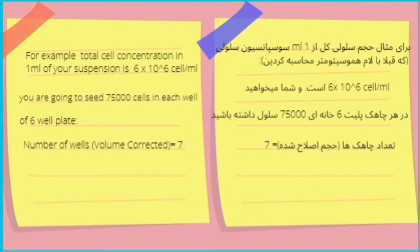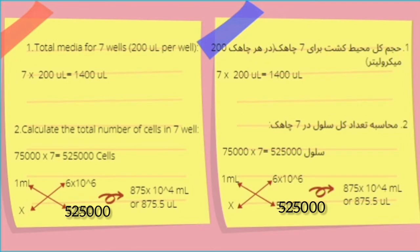As first step, you need to calculate how much media we need for seven wells. Let's say we need 200 microliters per well, so 7×200 will be the amount of total media we need for our experiment.